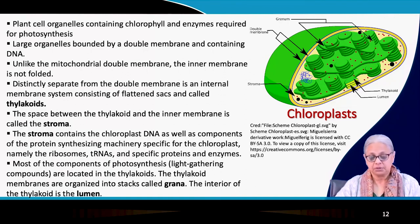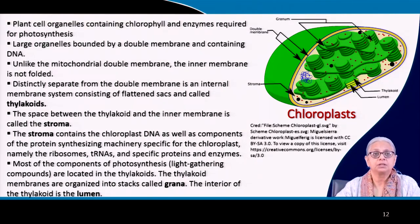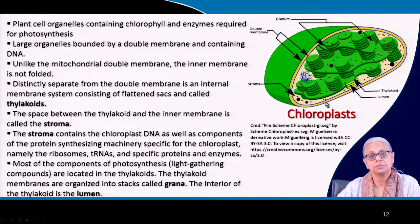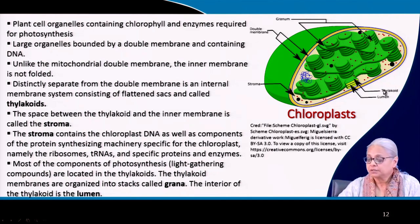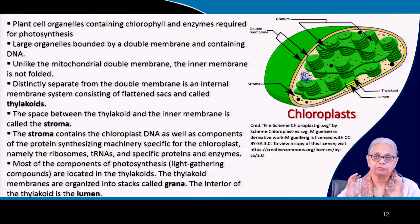Distinctly separate from the double membrane is an internal membrane which contains flattened sacs called thylakoids. The space between the thylakoids and the inner membrane is called the stroma — this empty space in light yellow color. The stroma contains the chloroplast's DNA and also has the protein synthesizing machinery required for the chloroplast, including ribosomes, transfer RNAs, and specific proteins and enzymes floating freely in the stroma. Most of the components required for photosynthesis — the light-gathering compounds — are located in the thylakoid. The interior of the thylakoid is the lumen, where reaction centers and light-harvesting compounds are present.